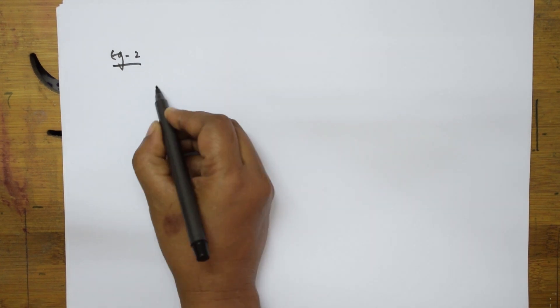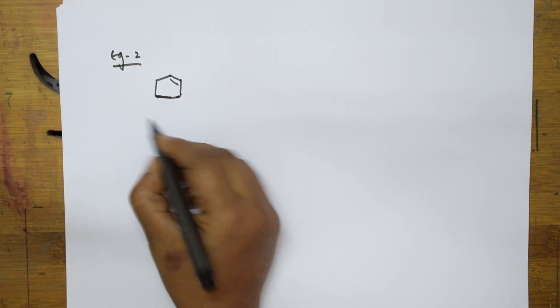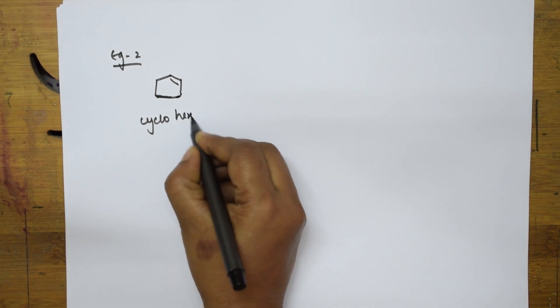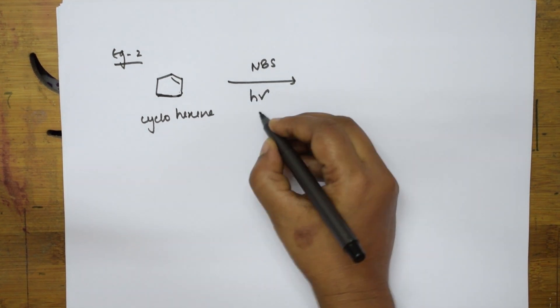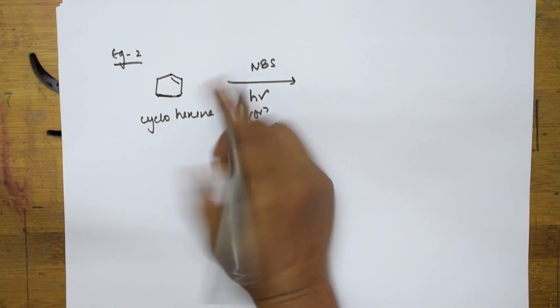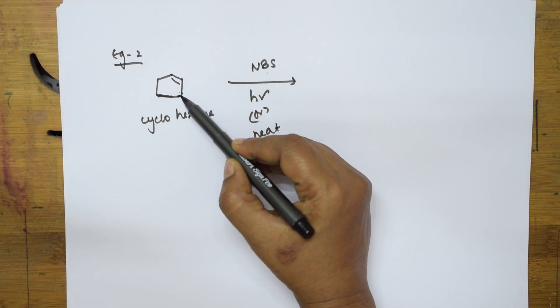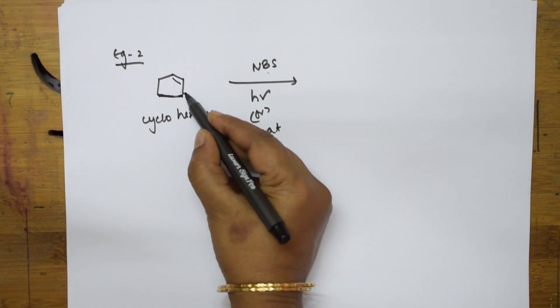Let me take one more example. I have the compound cyclohexene — a six-membered ring with a double bond. Now I am going to use NBS, and whenever you use NBS, hν (light) or heat is compulsory. NBS is a source of bromine supply. The bromine is going to attach to the position one carbon away from the double bond — leave the double bond and join at the adjacent carbon. Remember that.